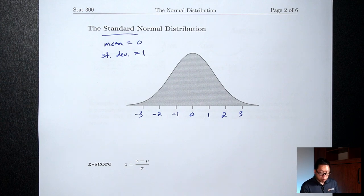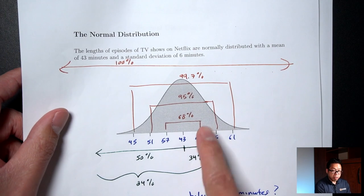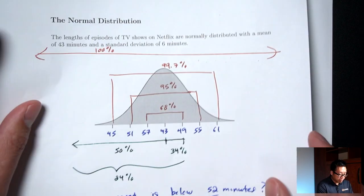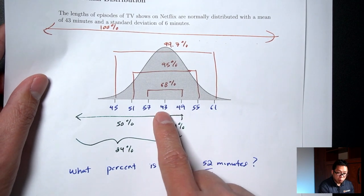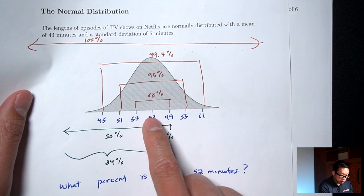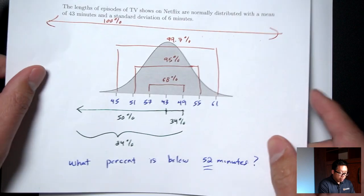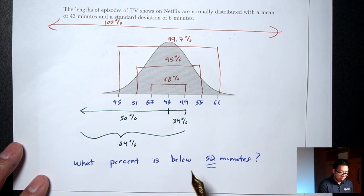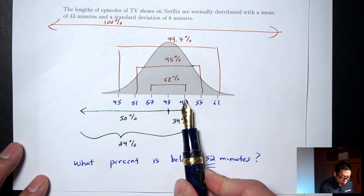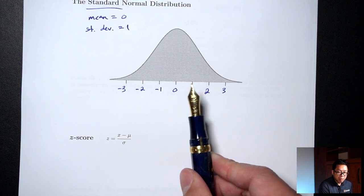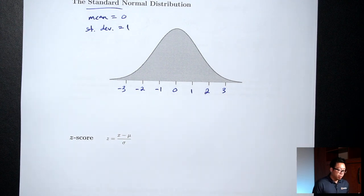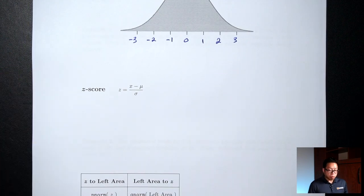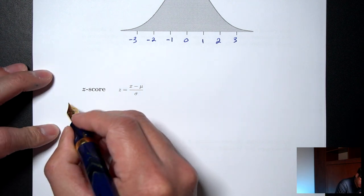The next thing we need is a way to convert from the non-standard picture to the standard picture. I know that 43 (the mean) goes with zero, 49 (one step above) goes with one, and 55 (two steps above) goes with two. We're interested in 52 — what percent is below 52? I know 52 is somewhere between one step and two steps above. I want to know exactly how many steps above — that's going to be the z-score. The z-score tells you how many standard deviations above or below the mean a value is.